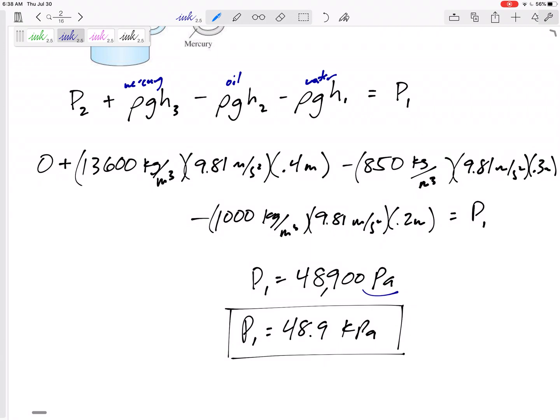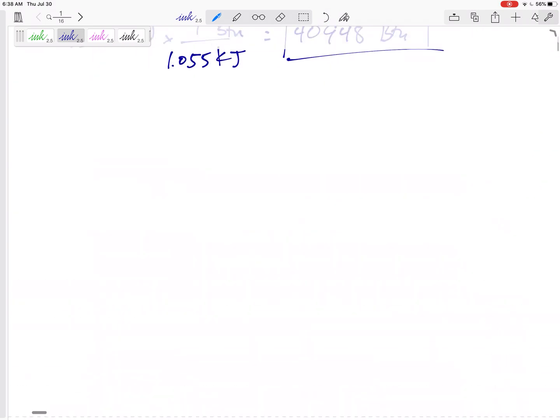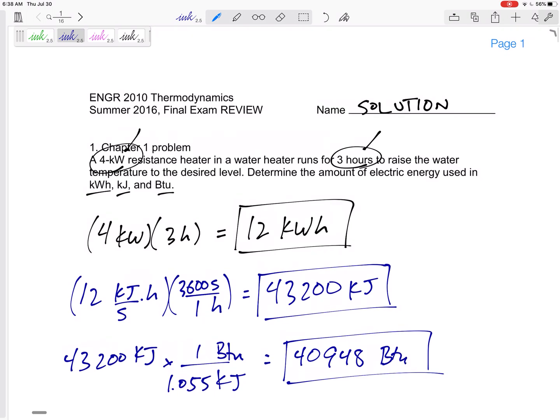I think this comes out to Pa, kilogram meter per second squared meter. That comes out to Pa, not kPa. All right. So problem number one, it'll be a short 10 point problem. Don't spend too much time on it.